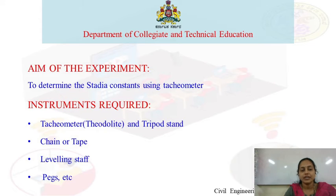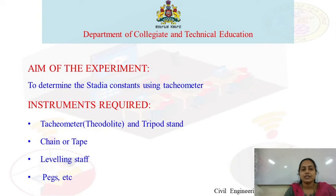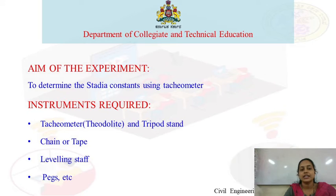The aim of the experiment is to determine the stadia constants using tachymetric constants. The instruments required are a tachymeter and theodolite, which will be used in the field and has stadia hairs.